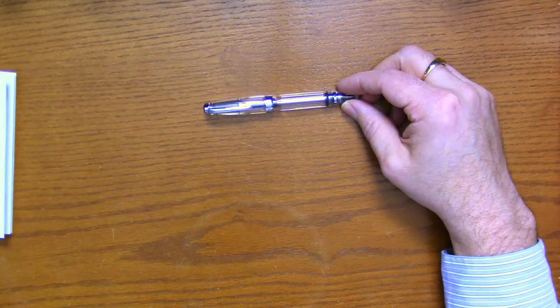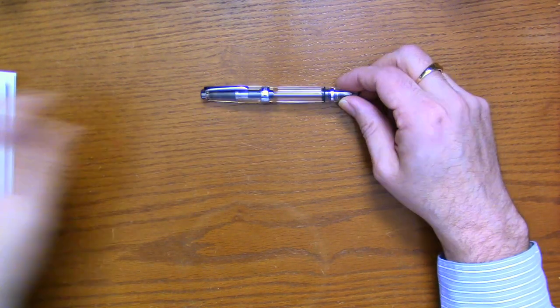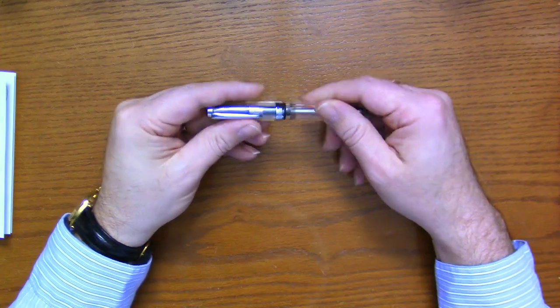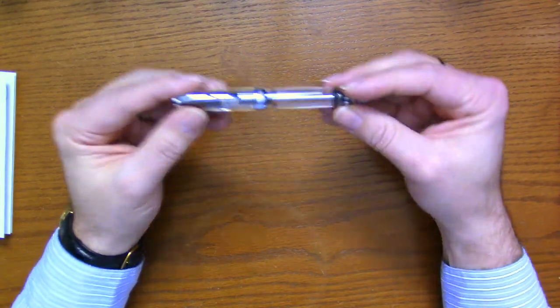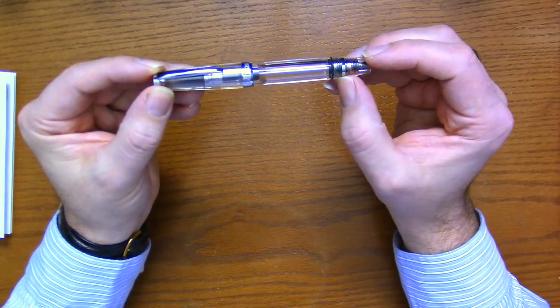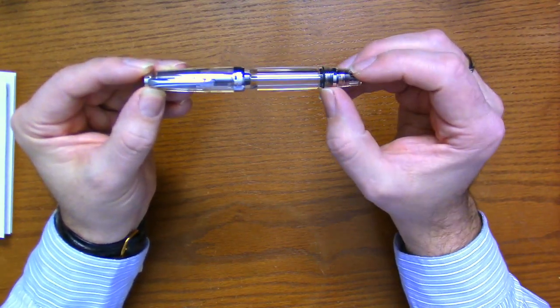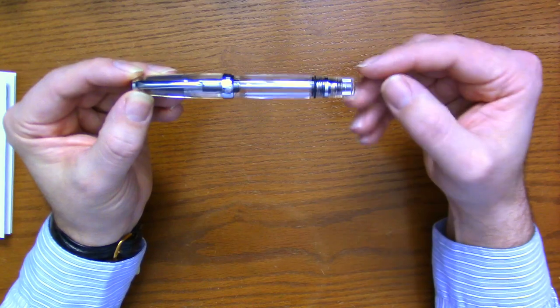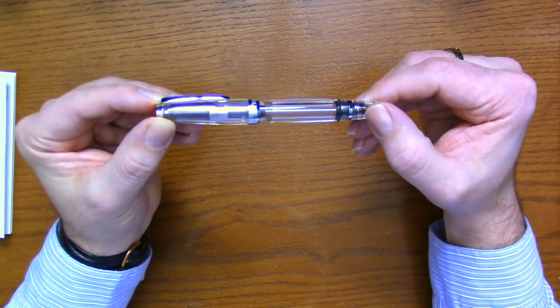It looks very similar to the TWSBI Mini Piston Filler. You're going to notice here we have threading and an O-ring on the end of the barrel, and a much smaller VAC knob.